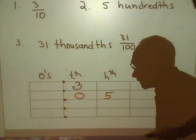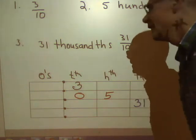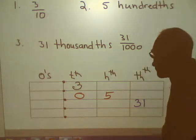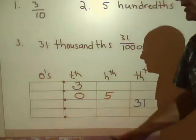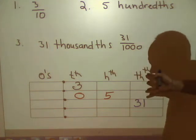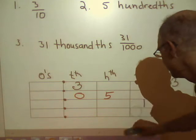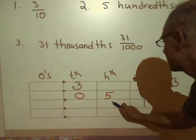If we put thirty-one in the thousandths column like this, we kind of go, hey, we can't do that. We're only allowed one digit in each of the place value columns. So we need to regroup.